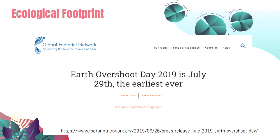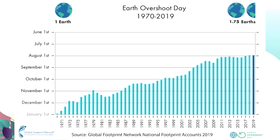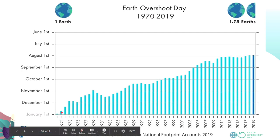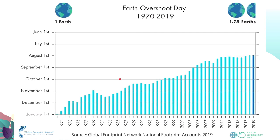This is from Global Footprint Network, where they map out the Earth Overshoot Day — the day we have exceeded the budget for natural resources for that year. From 1971 to 2019, our overshoot day has continuously moved earlier. In 2019, by as early as August 2, we had already consumed what we would need for the entire year — and this trend has only been steadily rising.